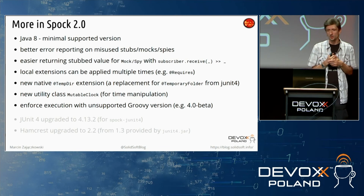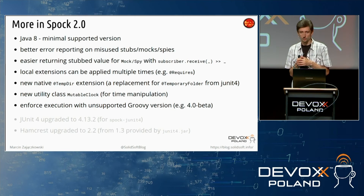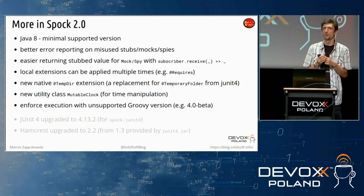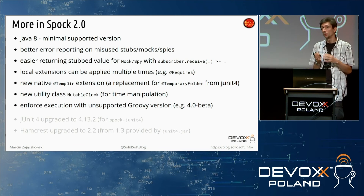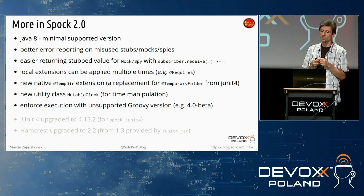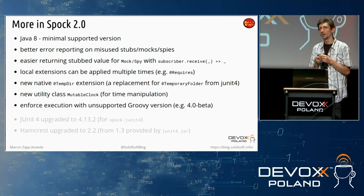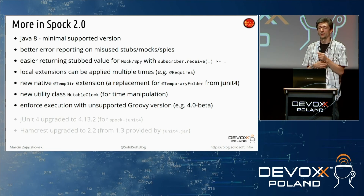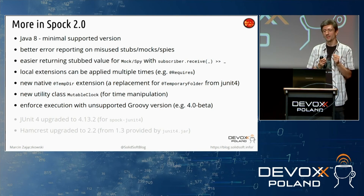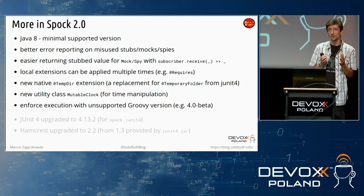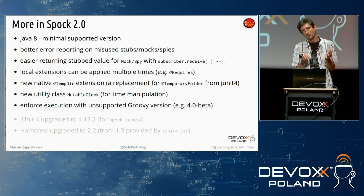Of course, it's not all. Just to mention some other important changes: the mocking syntax and behavior have been improved in Spock 2. Local extensions — those extensions with an annotation — can now be applied multiple times, which is especially useful for extensions related to conditional test execution. There is also a brand new TempDir native extension, which is a replacement for the popular TemporaryFolder rule from JUnit 4, making migration even easier. There is a new MutableClock utility class in Spock for flexible in-test time manipulation. And something that was a big problem in Spock 1.3 with Groovy 3: now you can enforce Spock execution with any supported Groovy version, for example Groovy 4, which is already almost in beta.